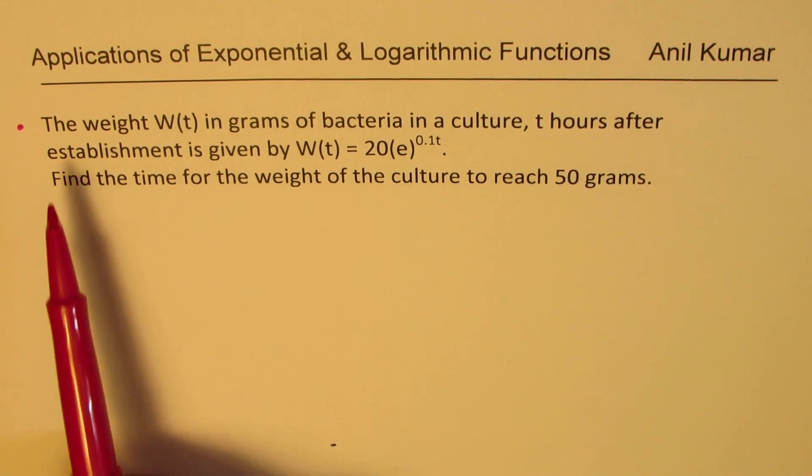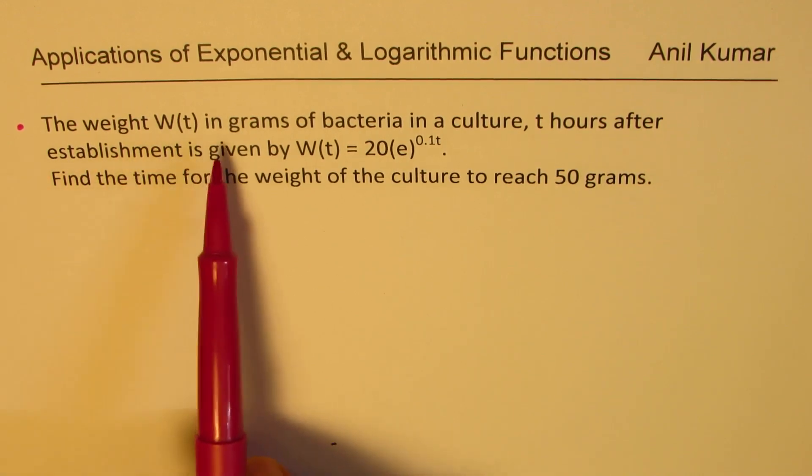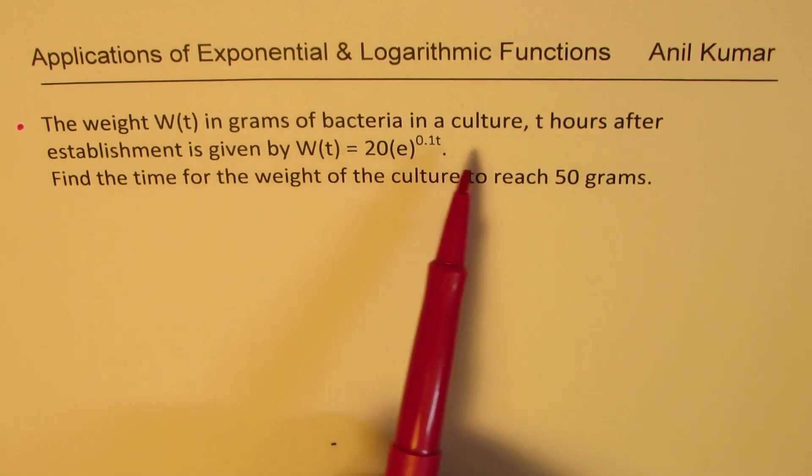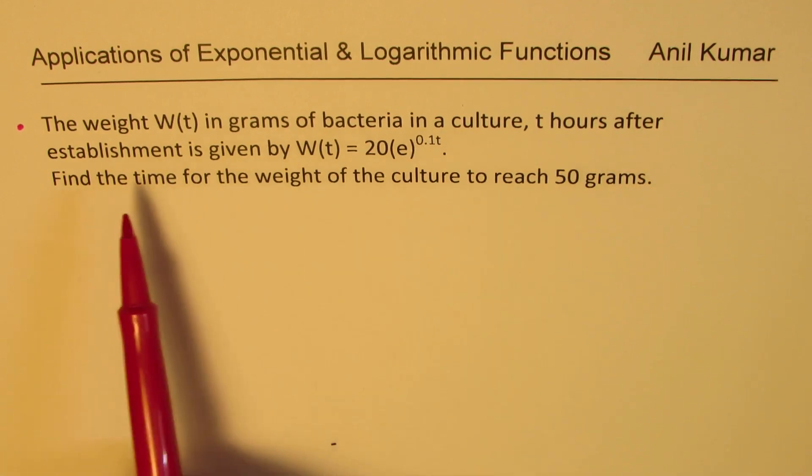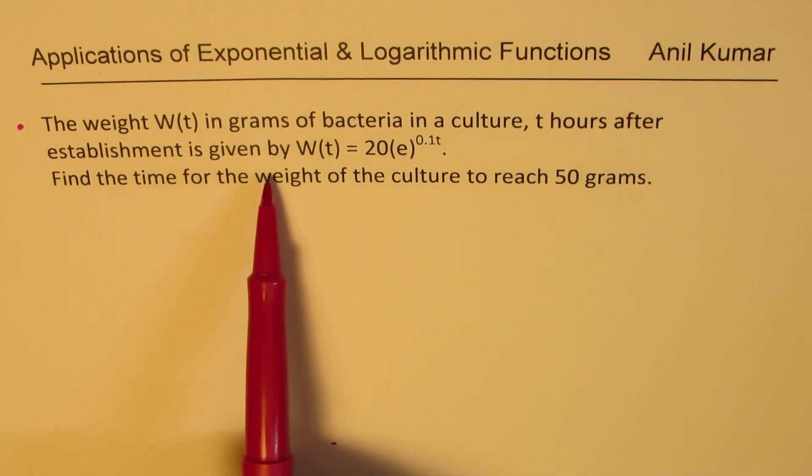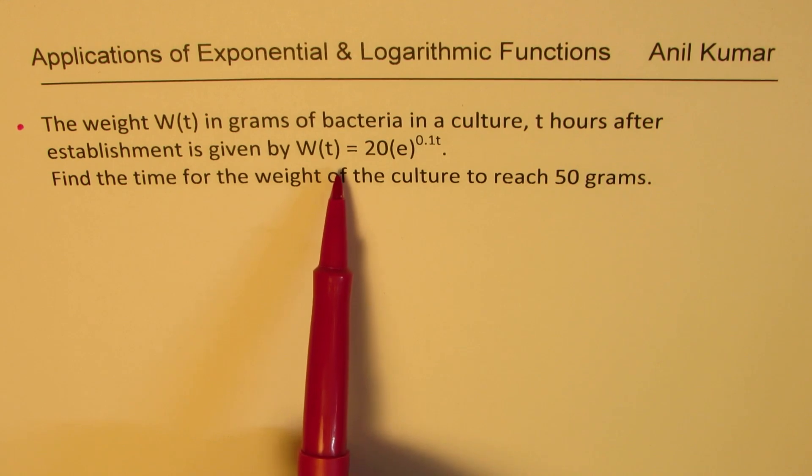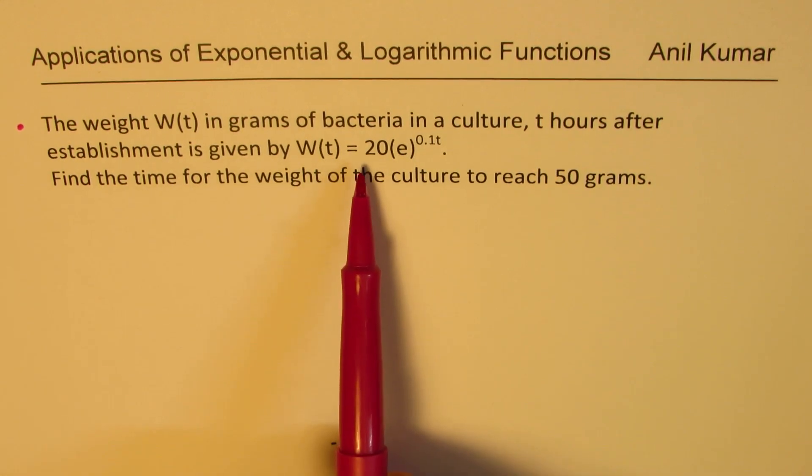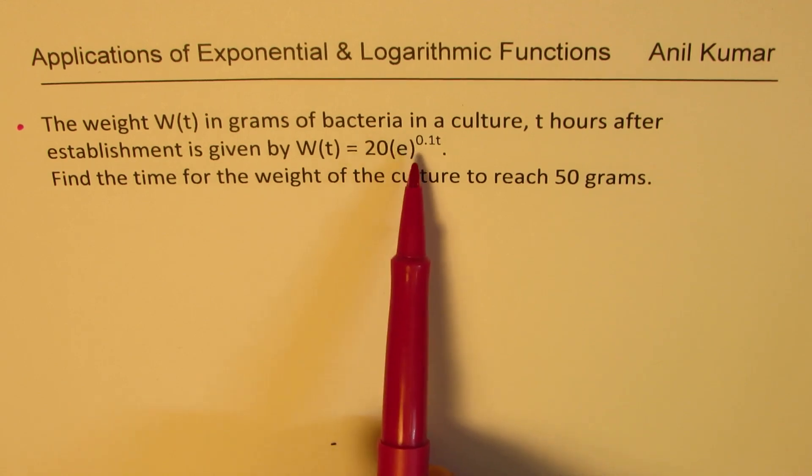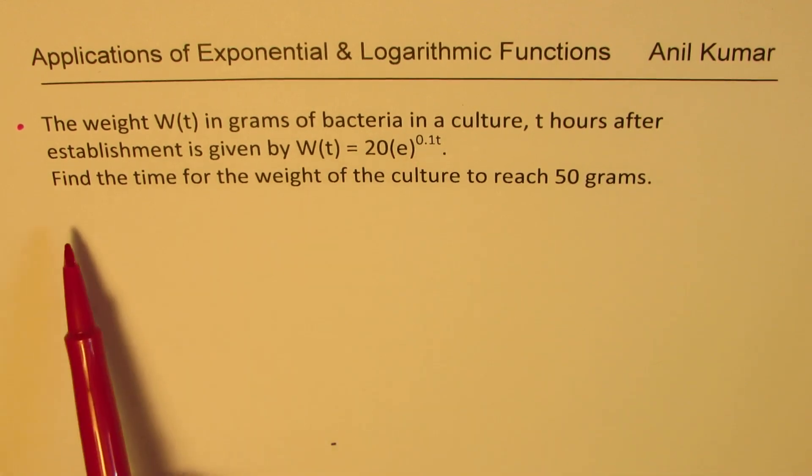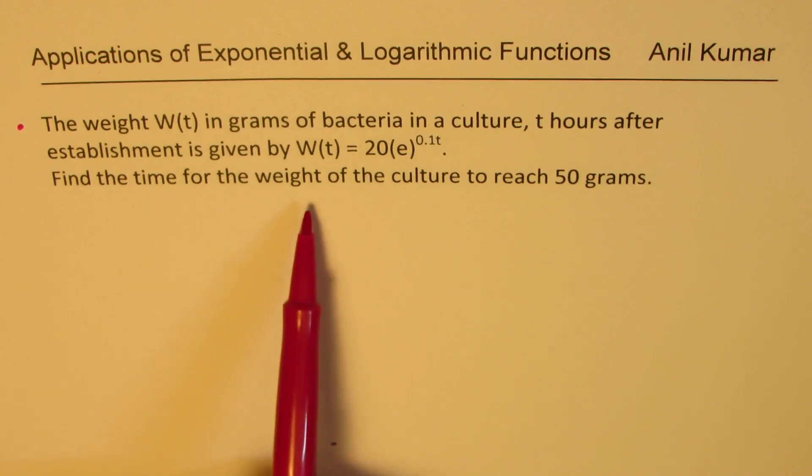The question here is: the weight W(t) in grams of bacteria in a culture t hours after establishment is given by W(t) equals 20e to the power of 0.1t. Find the time for the weight of the culture to reach 50 grams.